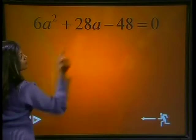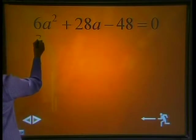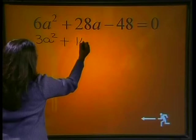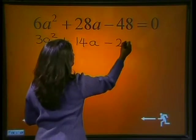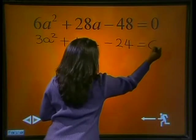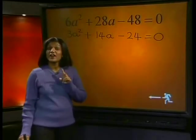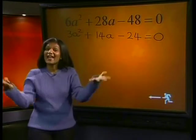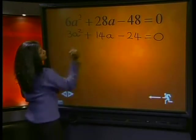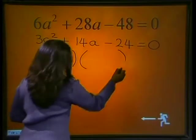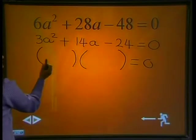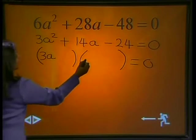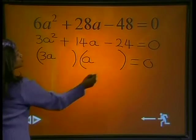Now I see that the common factor is 2. So each of these terms need to be divided by 2. 6a² ÷ 2 gives me 3a² + 28a ÷ 2 gives me 14a. 48 ÷ 2 gives me 24. And 0 ÷ 2 gives me 0. Now remember, 0 ÷ 2 is still just 0. No matter how much you divide up nothing, you still have nothing. Now I know this trinomial factorizes to two brackets. I also know that the first term in both these brackets will consist of the factors of 3a². So I write 3a here and a here. We need to find these numbers.